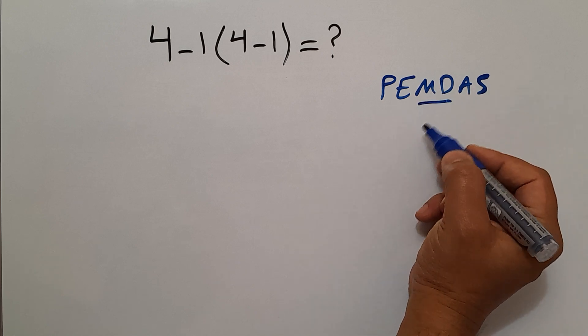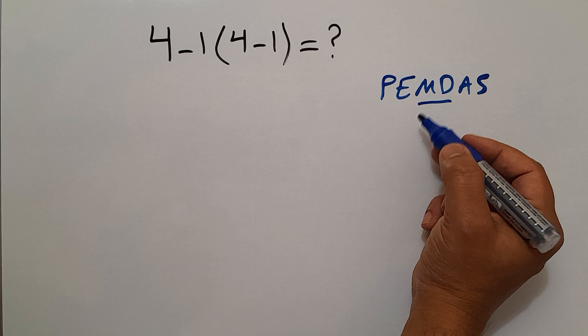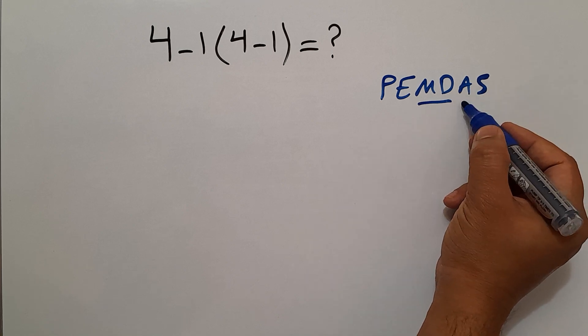Remember that multiplication and division have equal priority and we have to work from left to right. The same applies to addition and subtraction.